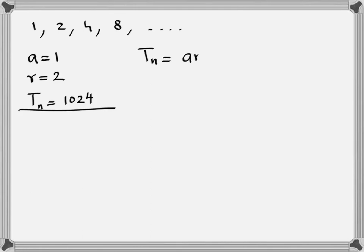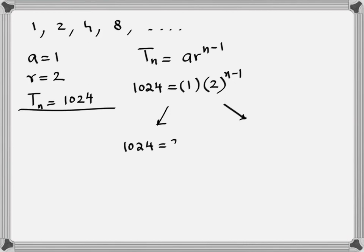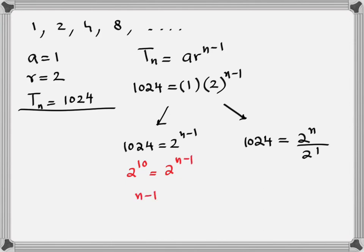If I write it in the formula, Tn equals Ar to the power of n minus 1, so 1024 equals 1 times 2 raised to the power of n minus 1. A little bit of indices is needed here. We know 1024 is 2 raised to the power of 10. Since the bases are the same, the powers must be equal, so n minus 1 equals 10. Therefore, n comes out to be 11.